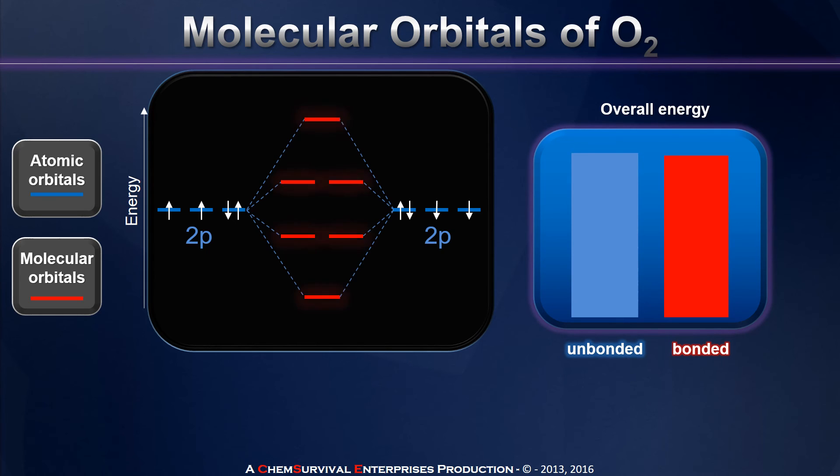When we do this, we don't see any real surprises here. Sigma, sigma star, pi and pi star molecular orbitals form. Six atomic orbitals in, six molecular orbitals out.